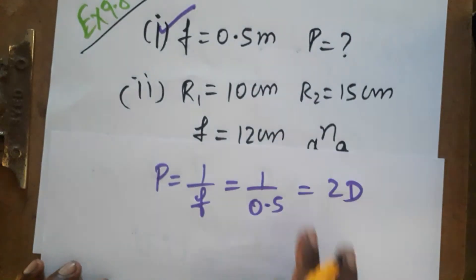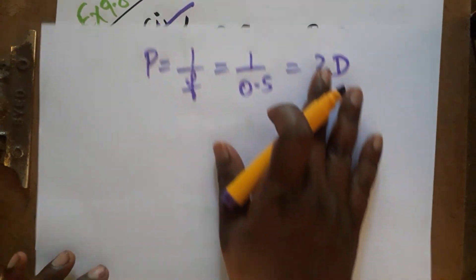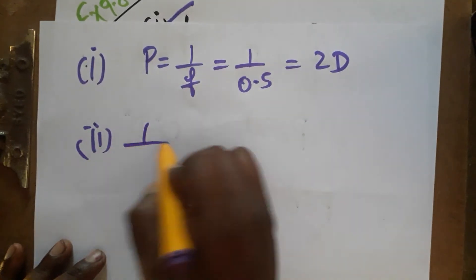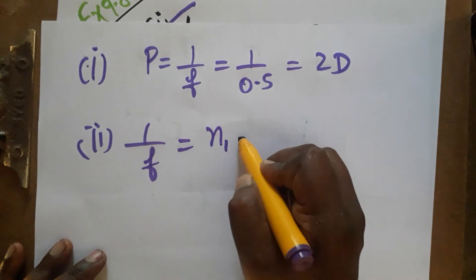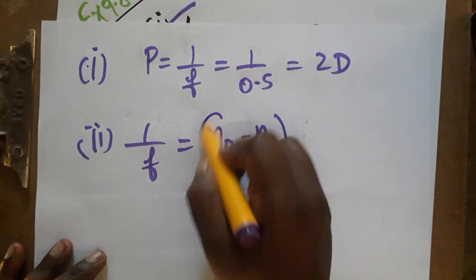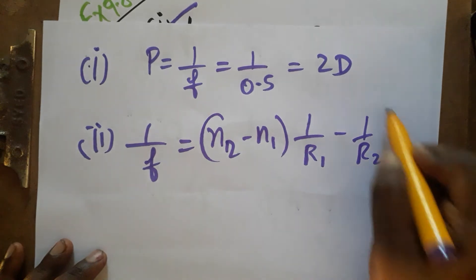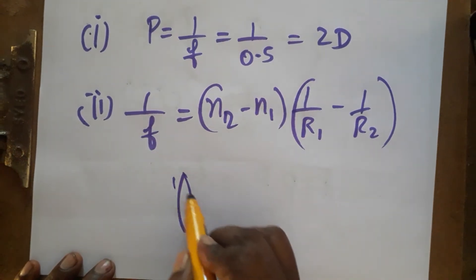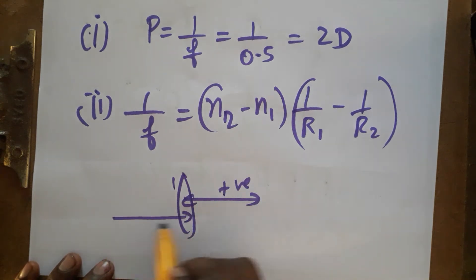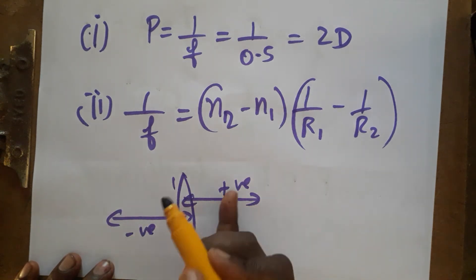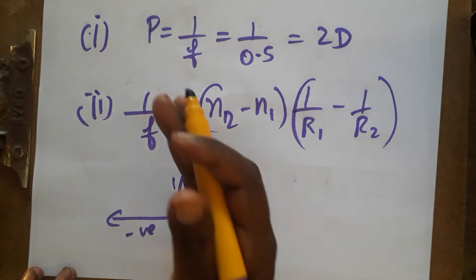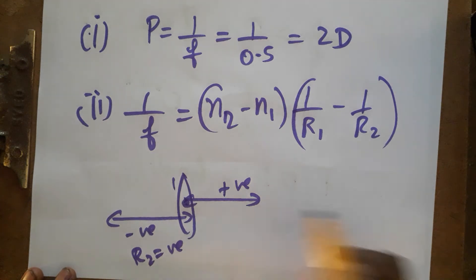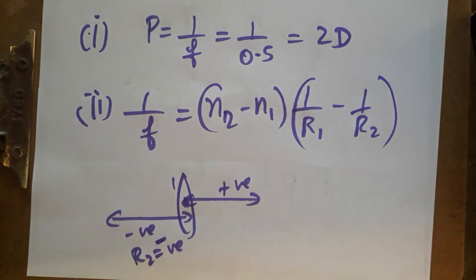For the second question, the radius of curvature and focal length are given, and we need to find the refractive index. We use the lensmaker's equation: 1 over f equals (n2 minus n1) times (1 over R1 minus 1 over R2). We are using a convex lens here. The first surface has a positive radius of curvature and the second surface has a negative radius of curvature, because it is on the left side of the optical center.